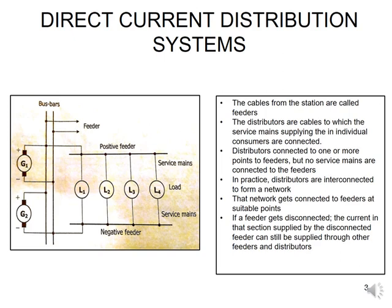Your service mains are never connected to your feeders but are connected straight to your distributors. There are really four general types of DC current distributors: a distributor fed at one end, a distributor fed at both ends as shown in the diagram with the positive and negative, a distributor fed at the center, or ring distributors. For this chapter, we are going to look at ring distributors because we want our systems to be reliable.